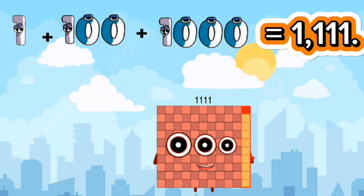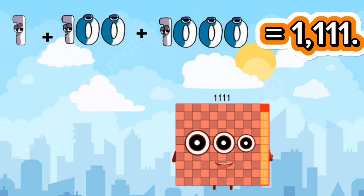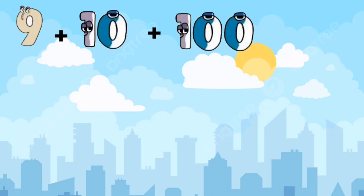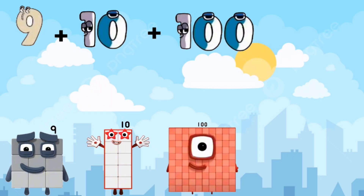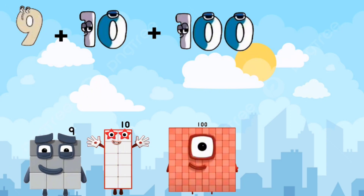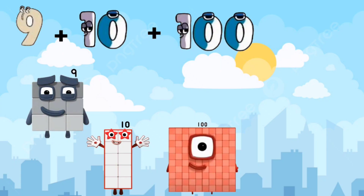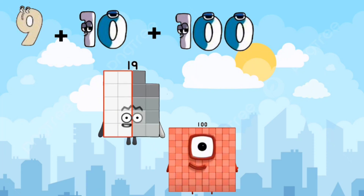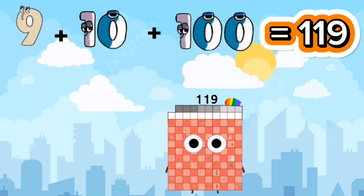One hundred eleven plus one thousand. 9 plus ten equals nineteen. Nineteen plus one hundred equals one hundred nineteen.